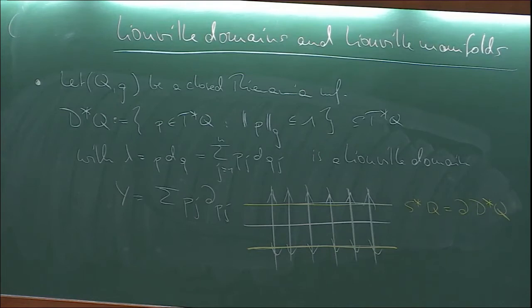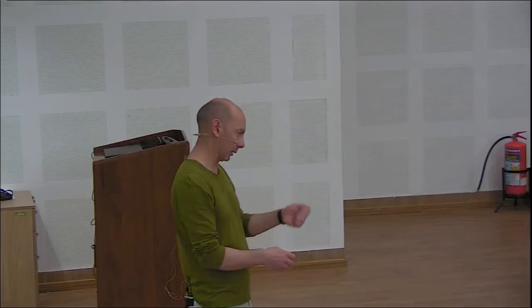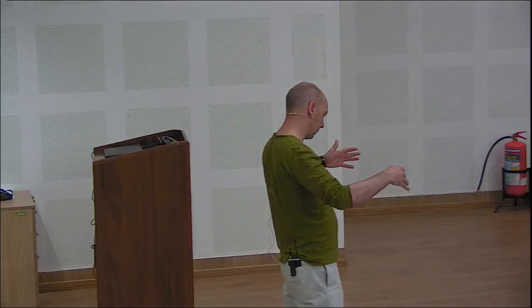Another class of examples comes from Stein manifolds. If you have a complex manifold with an exhausting plurisubharmonic function, then from that plurisubharmonic function you can build a lambda and also a symplectic form. If you take a compact subset, like a sublevel set of a regular value, then that will be another example of a Liouville domain.